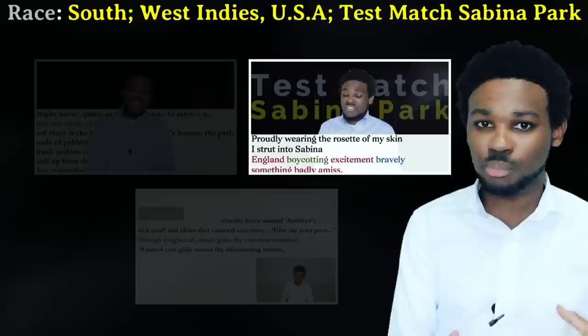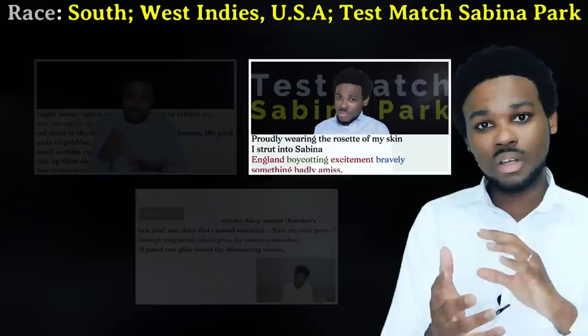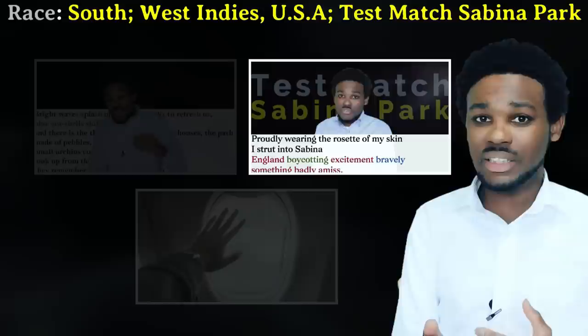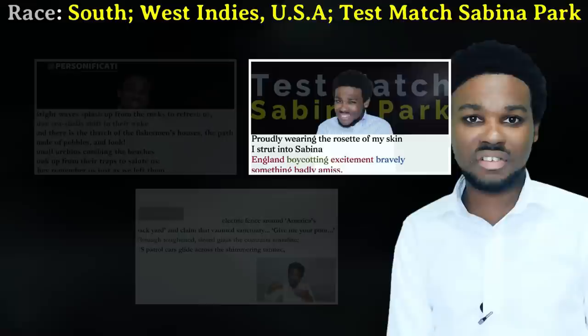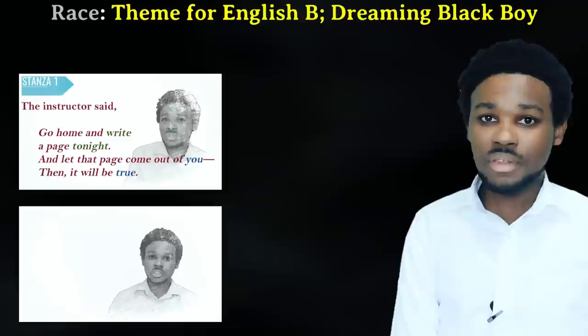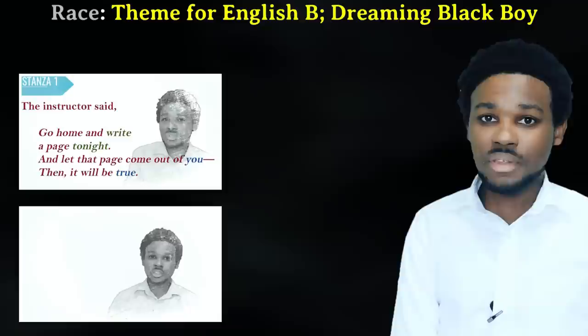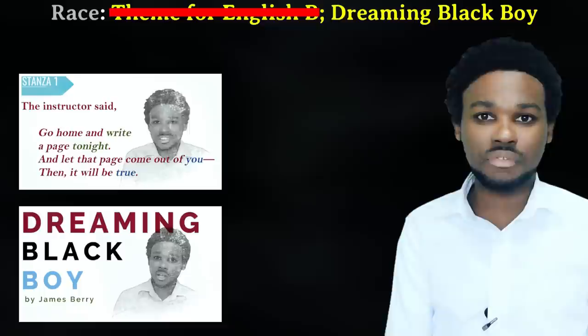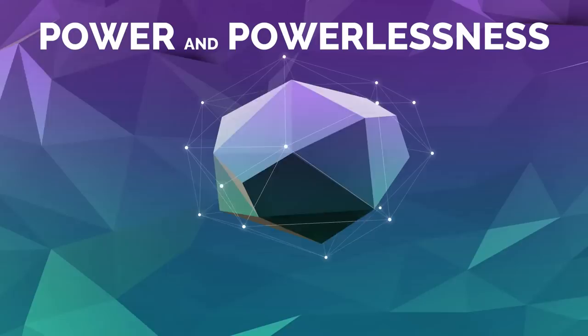Test Match Sabina Park is quite different from West Indies USA and South because here the expected prejudice against black people is completely reversed. The white man walks into Sabina Park feeling like he's better than the West Indians. But seeing how the West Indian cricket team completely dominates the English side, it's as if all of a sudden whiteness is now inferior to the blacks. Remember that this poem is as much about culture and nationalism as it is about race. Theme for English B and Dreaming Black Boy both explore how blackness actually limits the potential of the speakers and causes them pain and isolation.